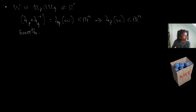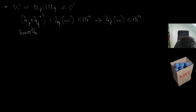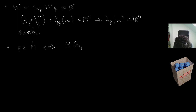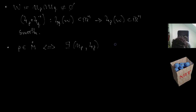Now I want to talk about interior and boundary points. We say a point p is in the interior of M if there exists a chart containing p such that ψ_p of U_p is open in R^n.